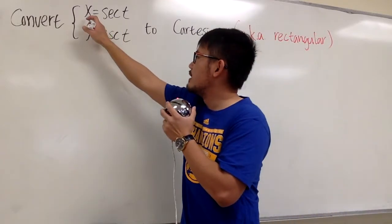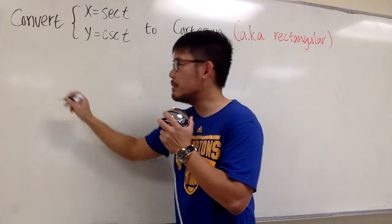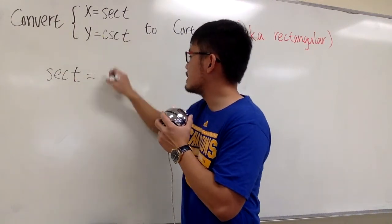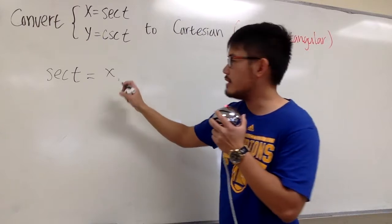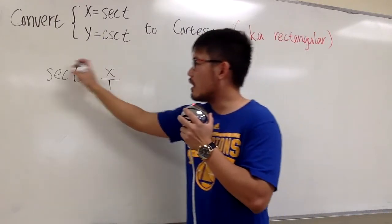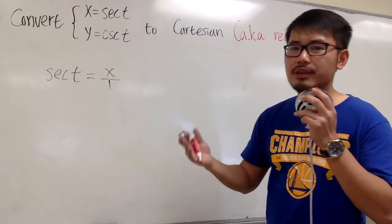Let's look at the x equation, x is equal to secant t. Let me put down secant t is equal to x, and for the x, I will look at the x as x over 1. The reason is because, based off this equation, I can draw a right triangle and then figure out the sides.